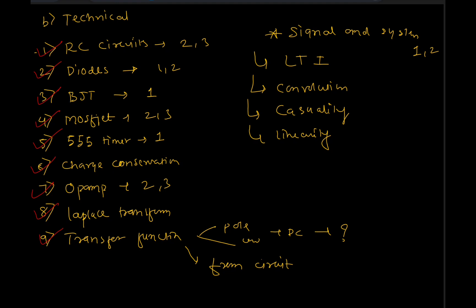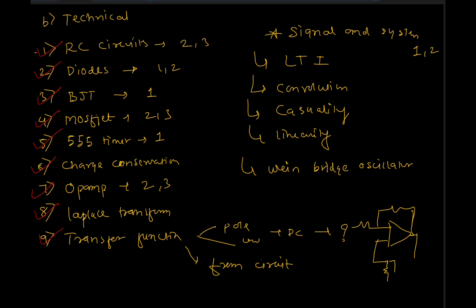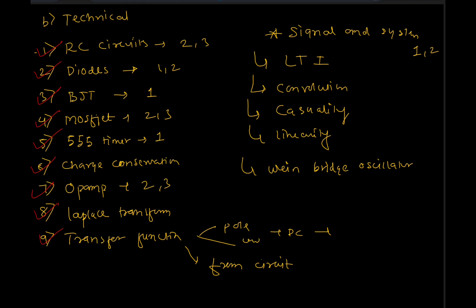One more popular and frequently asked question type is the Wien Bridge Oscillator. Study this circuit — it has an RC circuit configuration and they ask you the frequency of oscillation, or ask you to calculate the resistor value required to sustain oscillation. Study the Wien Bridge Oscillator circuit thoroughly.